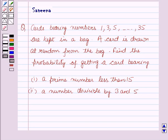Hello and welcome to the session. In this session we discuss a question which says that cards bearing numbers 1, 3, 5 and so on up to 35 are kept in a bag. A card is drawn at random from the bag. Find the probability of getting a card bearing: first part, a prime number less than 15; second part, a number divisible by 3 and 5.